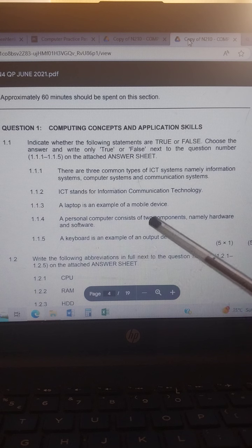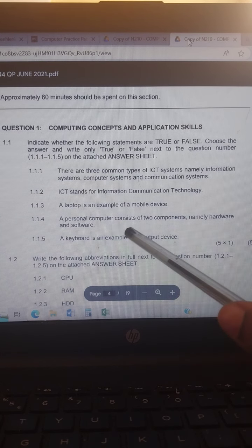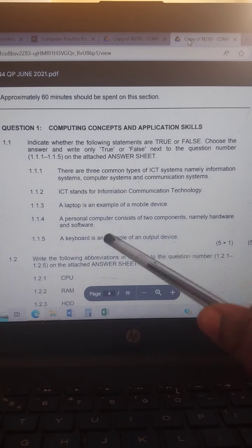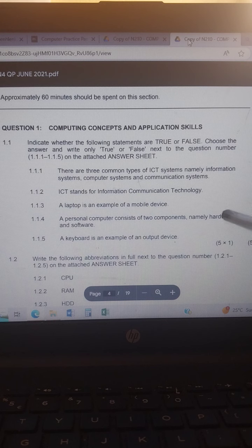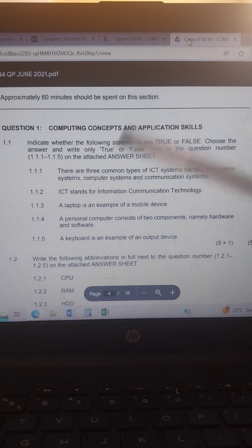Then we have a personal computer consists of two components, namely hardware and software, which is true. Then a keyboard is an example of an output device. Guys, output devices are those devices that take out information, and input devices put information. So a keyboard puts information, does not take out information, so it is false.